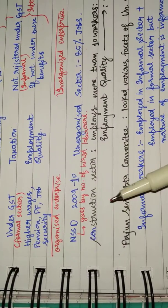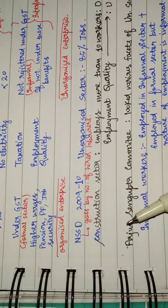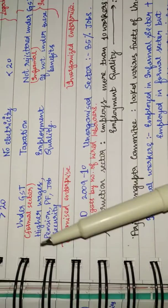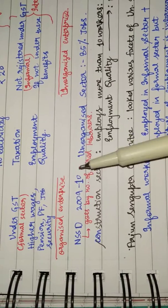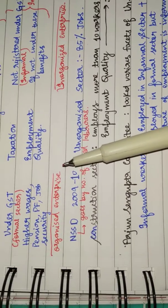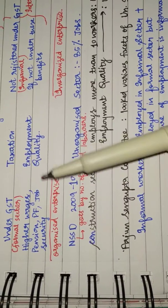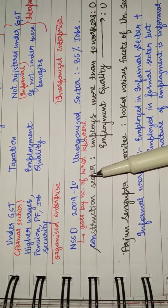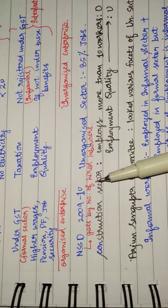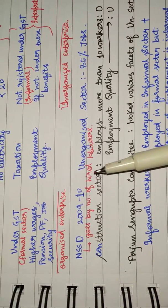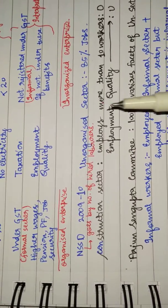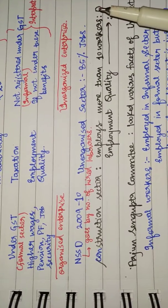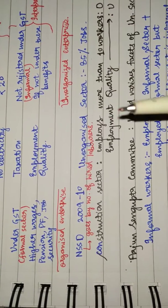Now there are various arguments, like what if the employment quality is very poor - where to keep that? For example, if you take the construction sector, construction sector employs more than 10 workers, then people would say legally it's an organized sector.